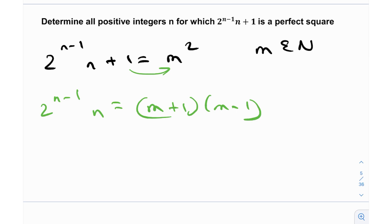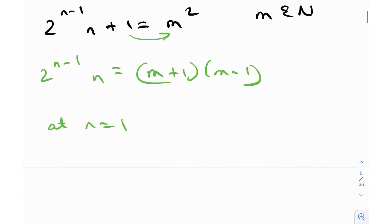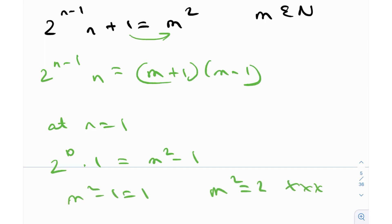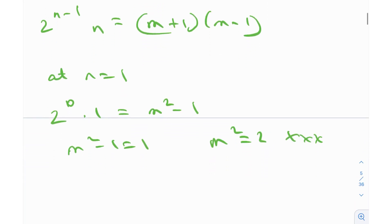If we check at n equals 1, we'll have 2 raised to the power of 1 minus 1, which is 0, times 1, equal to m squared minus 1. In other words, m squared minus 1 equals 1, so m squared equals 2, which is obviously not an integer. So n equals 1 gives no solution, and since n is a natural number, we can conclude n is greater than or equal to 2.